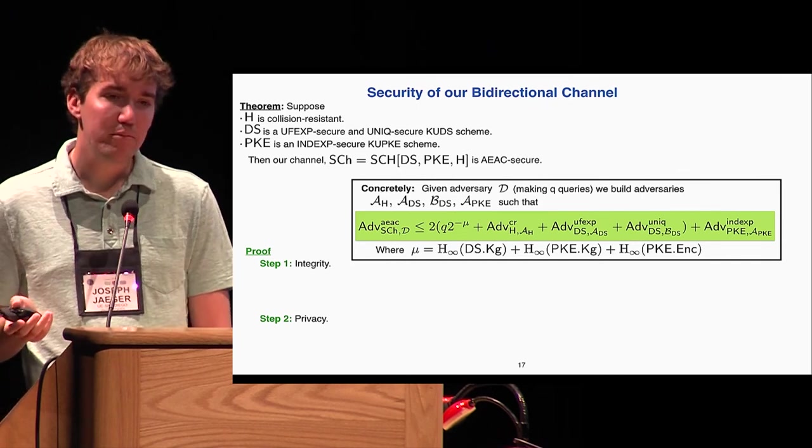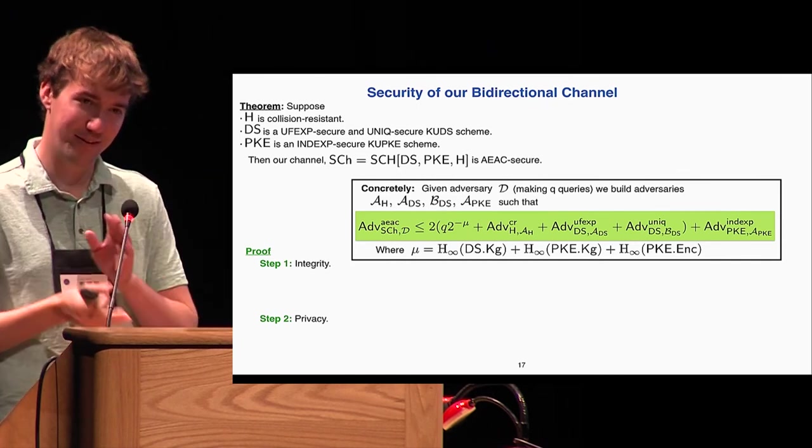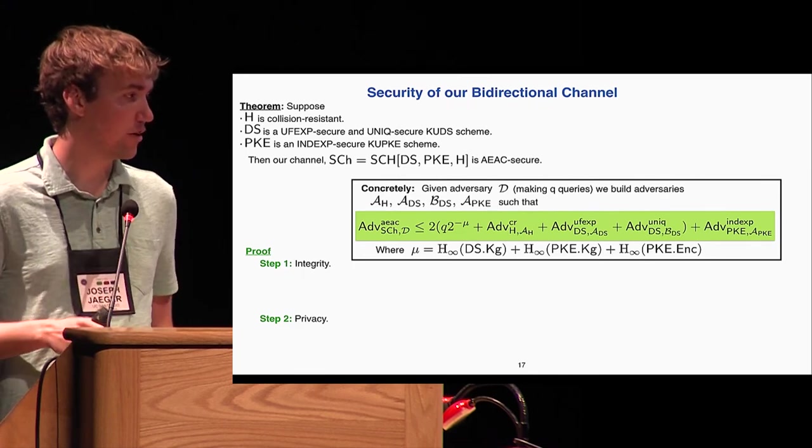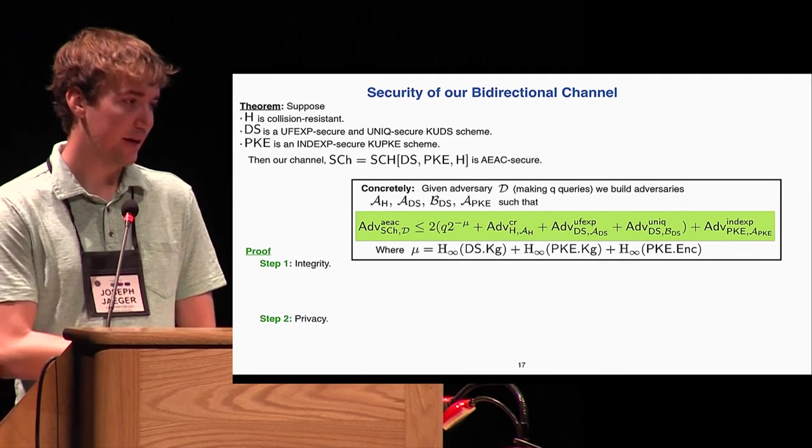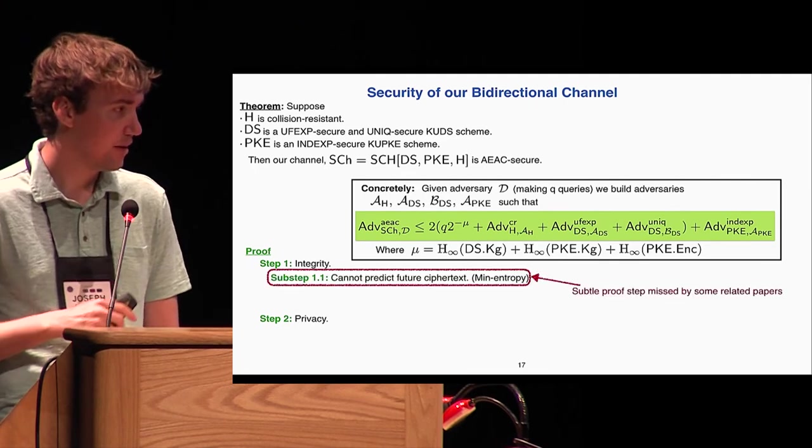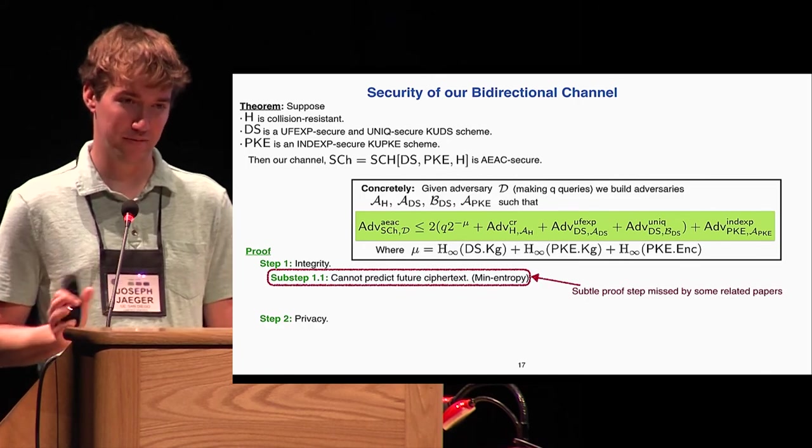Very roughly, we can divide the proof into two steps. First, we need to do a couple arguments so that we can show that the integrity holds, and then we move on to privacy. The first step is actually a somewhat subtle one which has been missed by some of the related work.